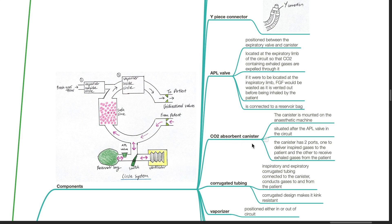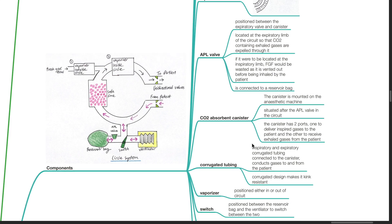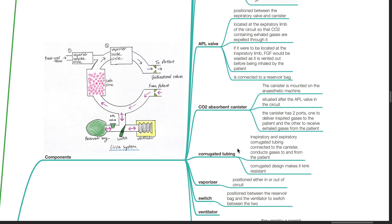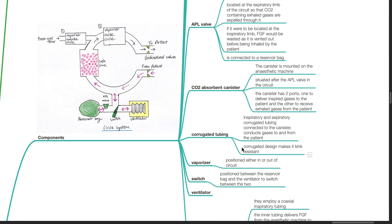CO2 absorbent canister: the canister is mounted on the anesthetic machine, situated after the APL valve in the circuit. It has two ports — one to deliver inspired gases to the patient and the other to receive exhaled gases from the patient. Corrugated tubing: inspiratory and expiratory corrugated tubing connected to the canister conducts gases to and from the patient. The corrugated design makes it kink resistant.